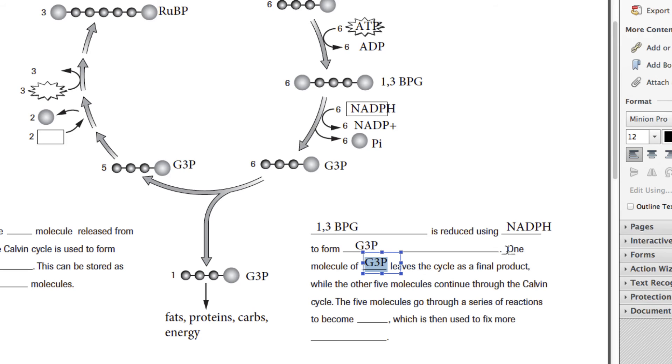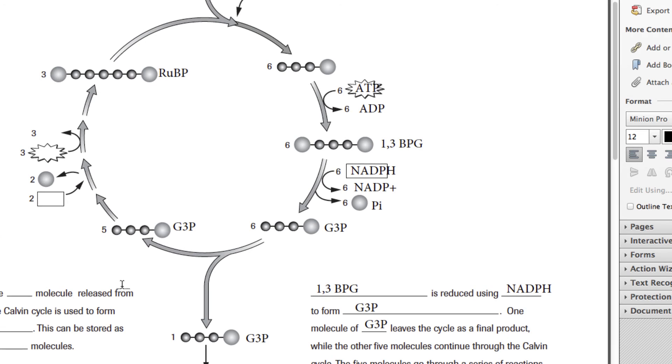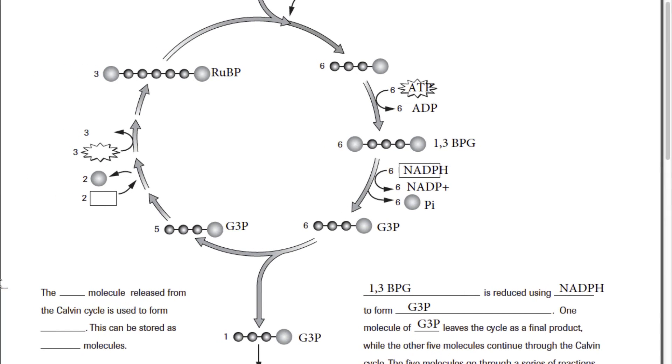The five molecules are going to go through a series of reactions to become what we start with, which is called RuBP, which is then used to fix, which means to grab and put into the reaction, carbon dioxide. Let's stick with our abbreviations because I think it works better.